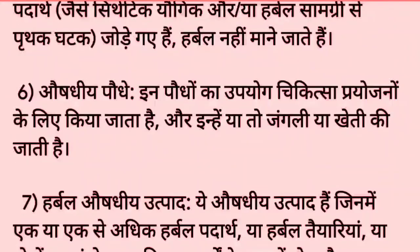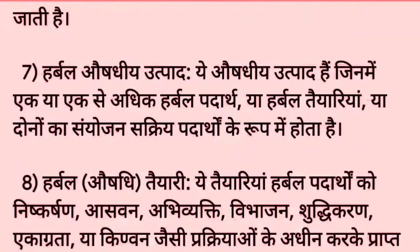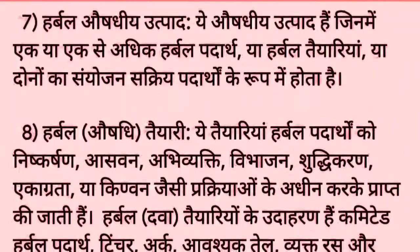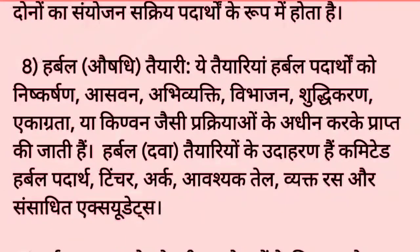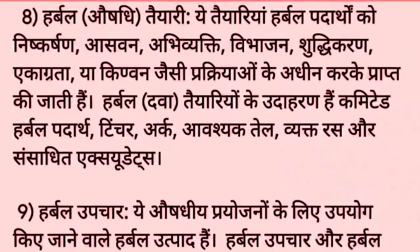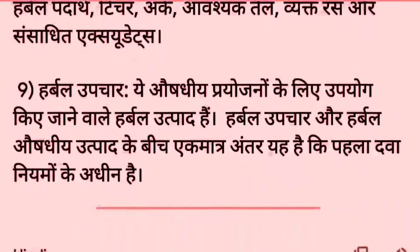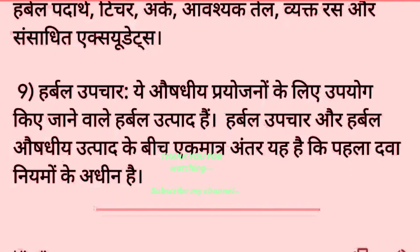इन पौधों का उपयोग चिकित्सा प्रयोजनों के लिए किया जाता है, और इन्हें या तो जंगली उगाया जाता है या खेती की जाती है। हर्बल दवा तैयारियों के उदाहरण हैं: comminuted हर्बल पदार्थ, टिंचर, अर्क, आवश्यक तेल, व्यक्त रस और संसाधित exudates। 9. हर्बल उपचार: ये औषधीय प्रयोजनों के लिए उपयोग किये जाने वाले हर्बल उत्पाद हैं। हर्बल उपचार और हर्बल औषधीय उत्पाद के बीच एकमात्र अंतर यह है कि पहला दवा नियमों के अधीन है।